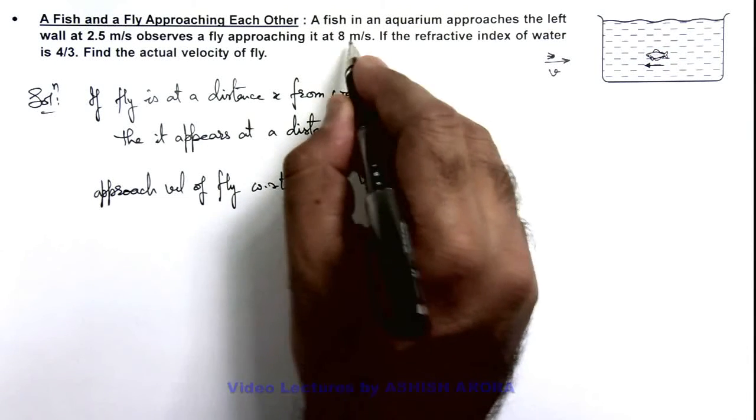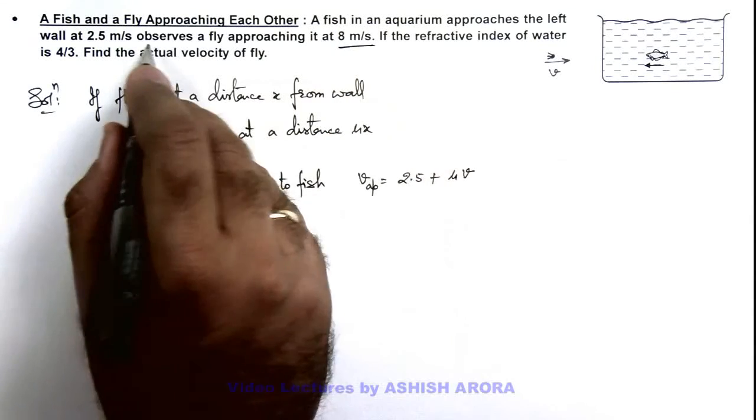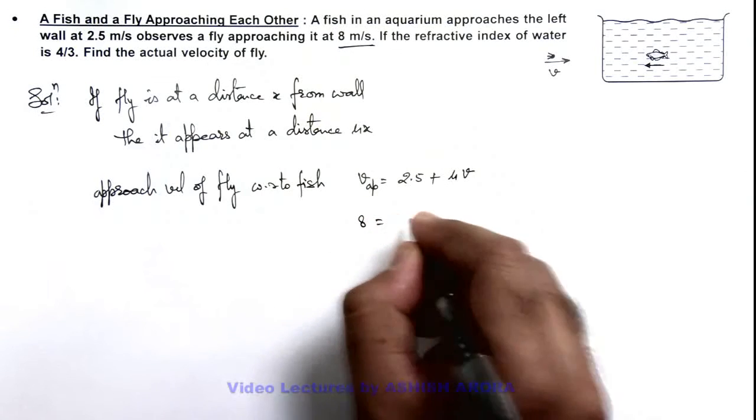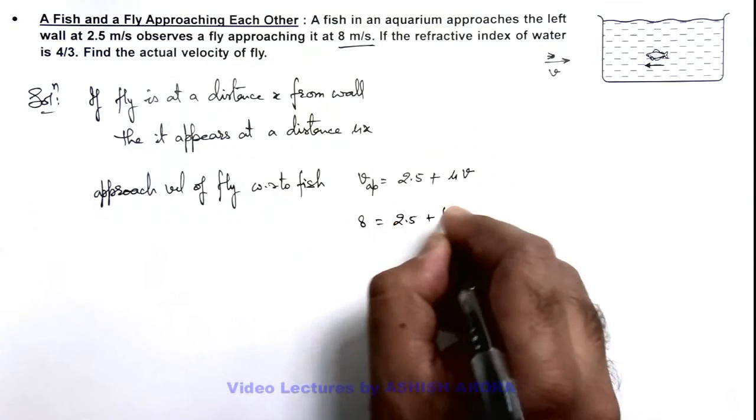Here we are given that the fish observes, that is with respect to it, the fly approaching at 8 meters per second which is 2.5 plus 4 by 3 v.